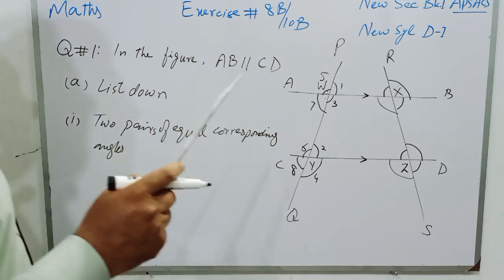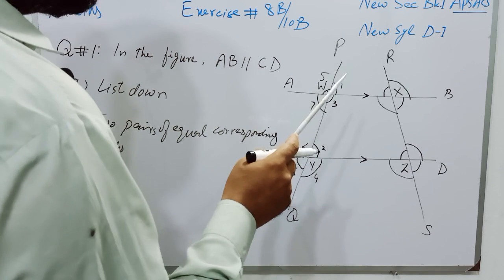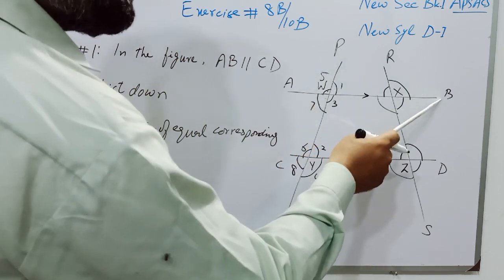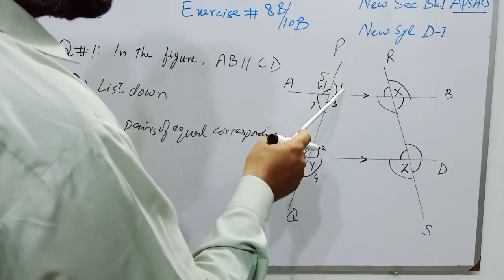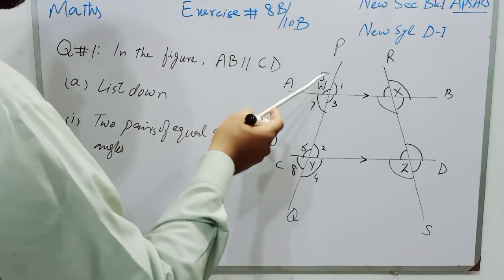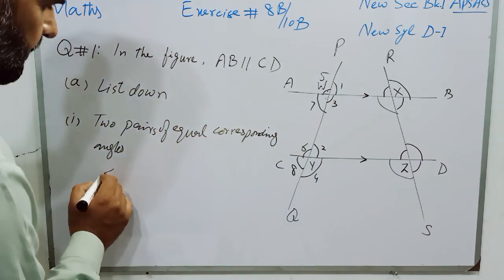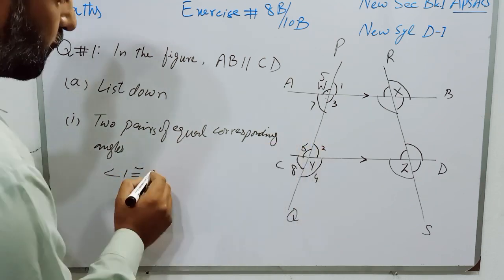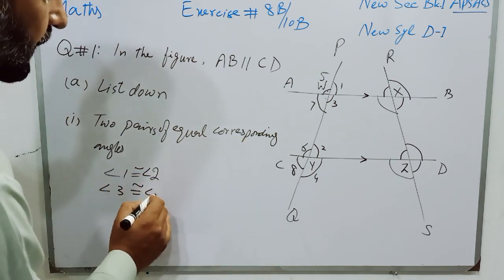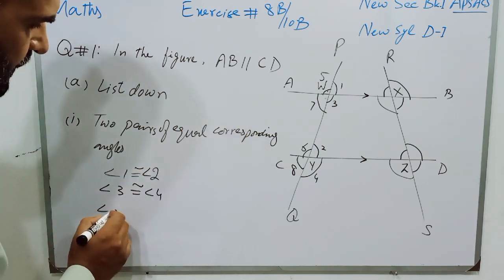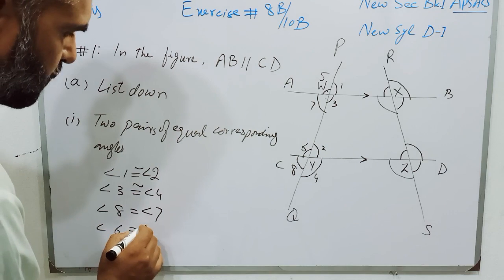For naming the angles, we can give them names as A, B, C, D or 1, 2, 3. We can also name Angle 1 as Angle PWB. So 2 pairs of equal corresponding angles are: Angle 1 is congruent to Angle 2, Angle 3 and Angle 4 are corresponding angles, Angle 8 and Angle 7 are corresponding angles, and Angle 6 and Angle 5 are corresponding angles.